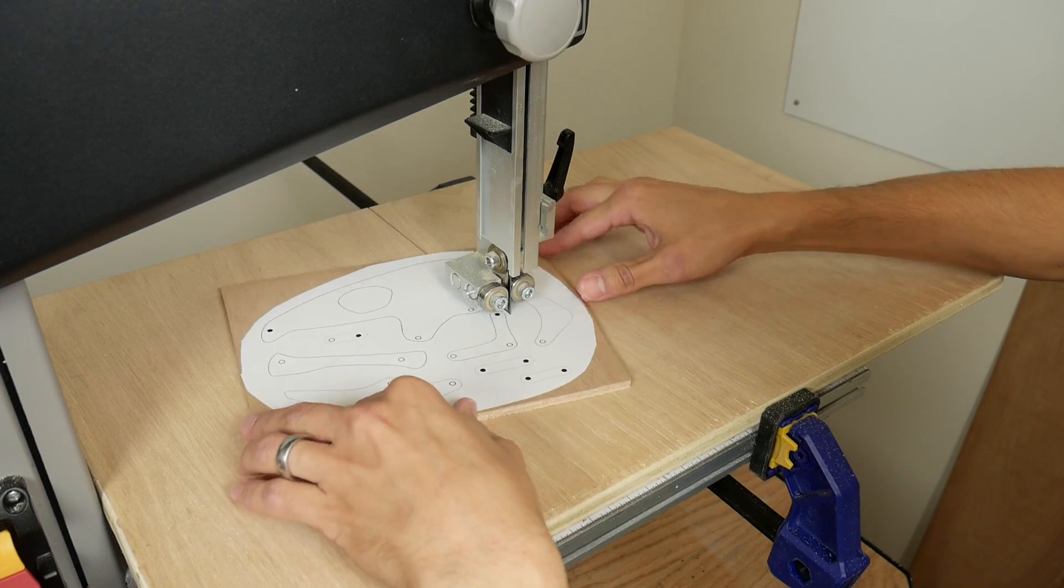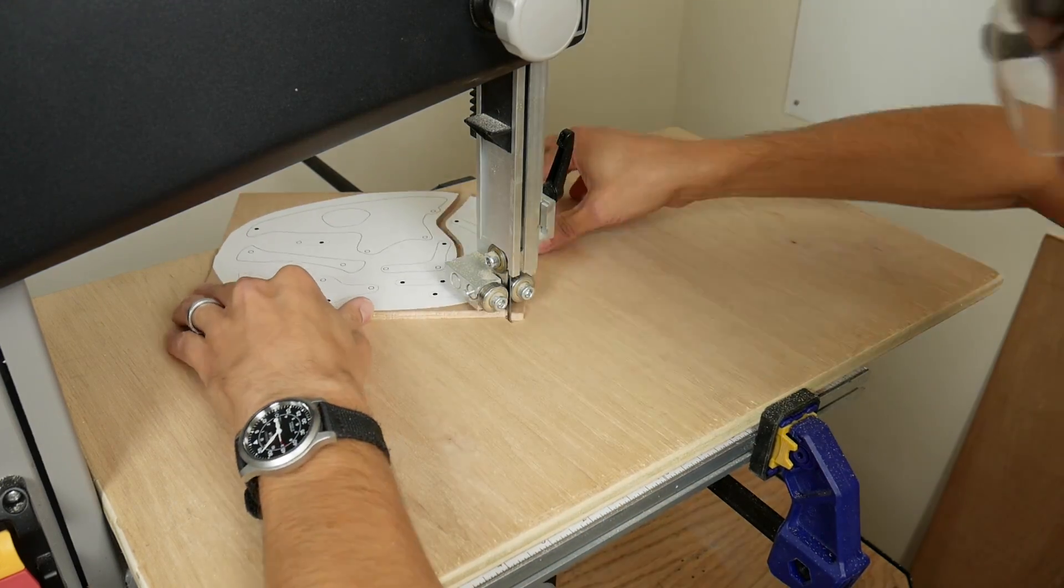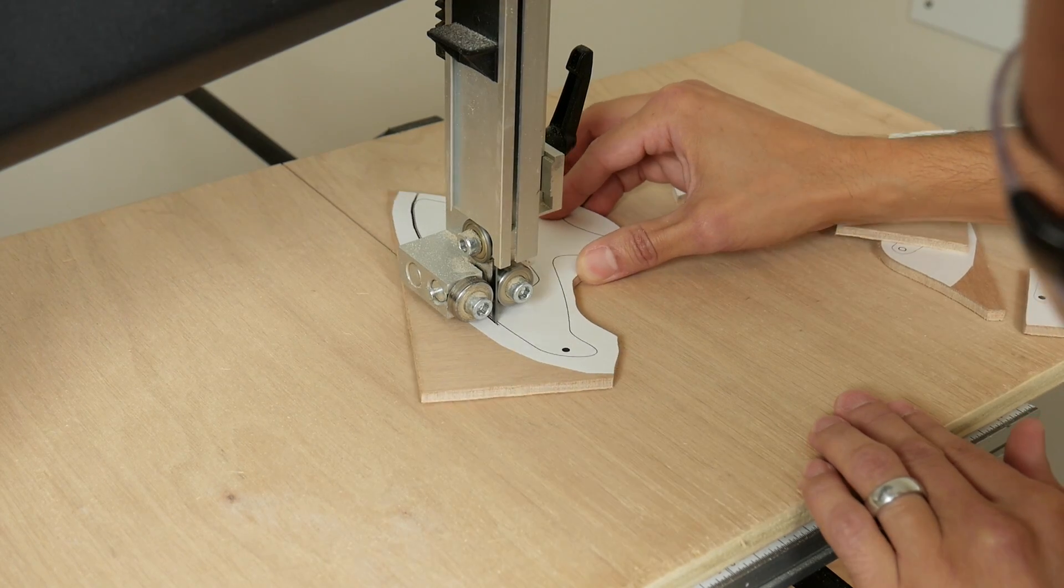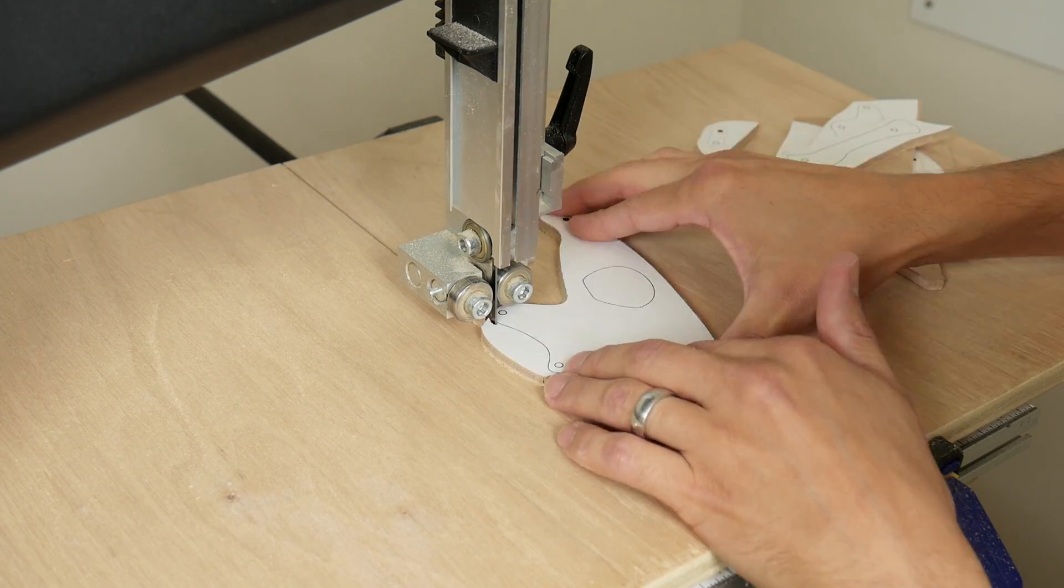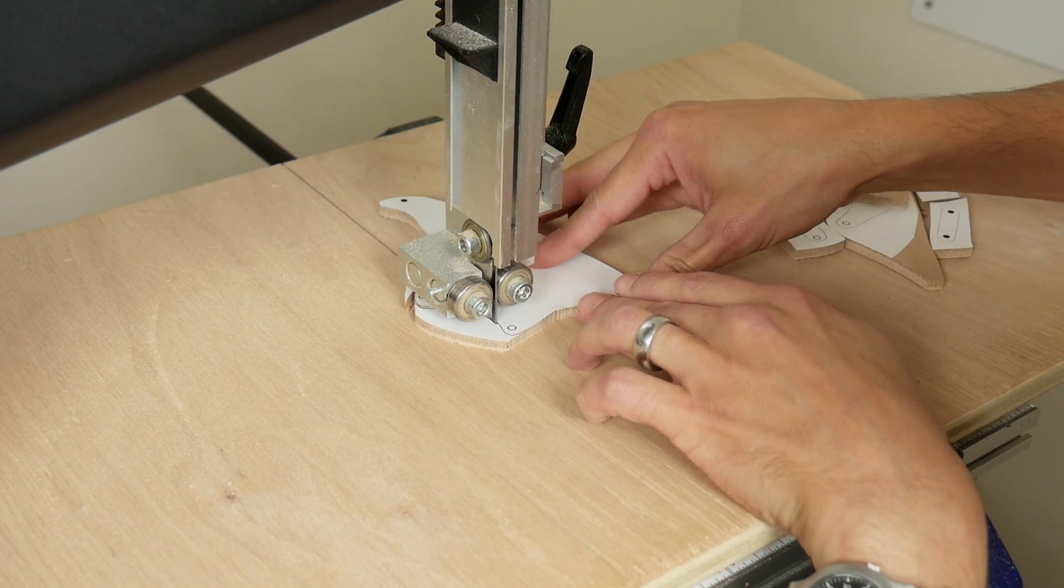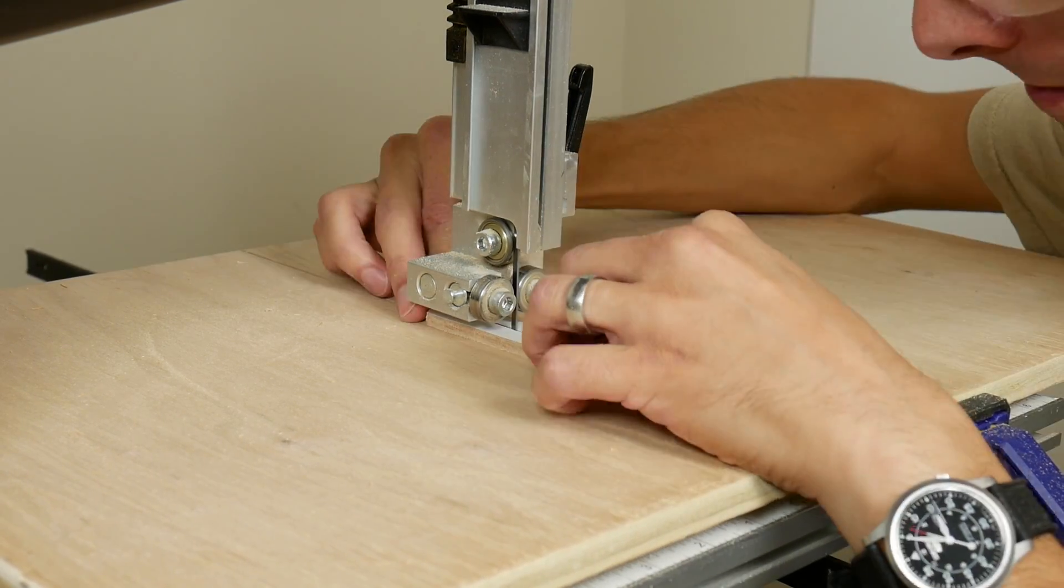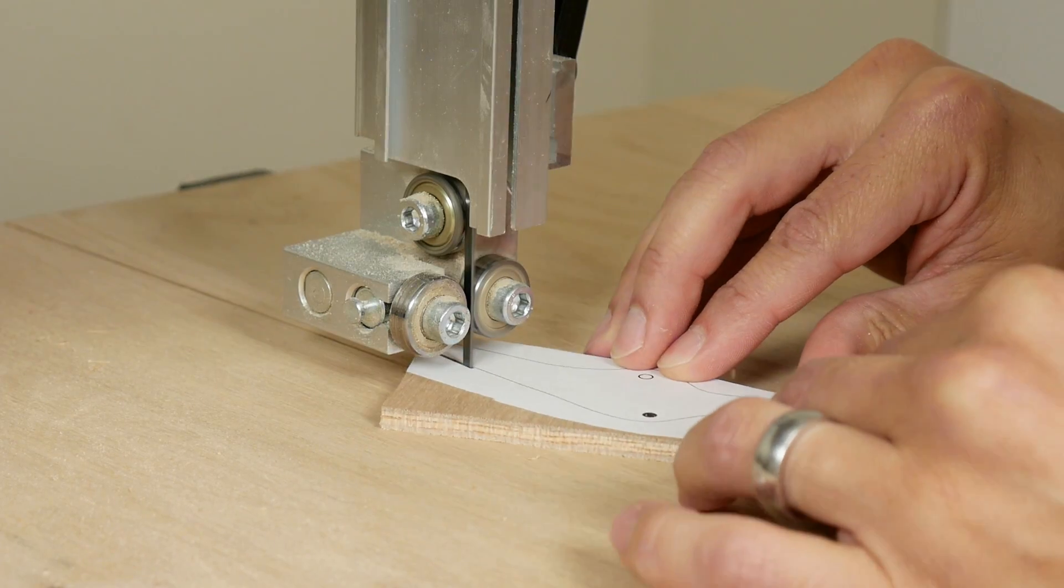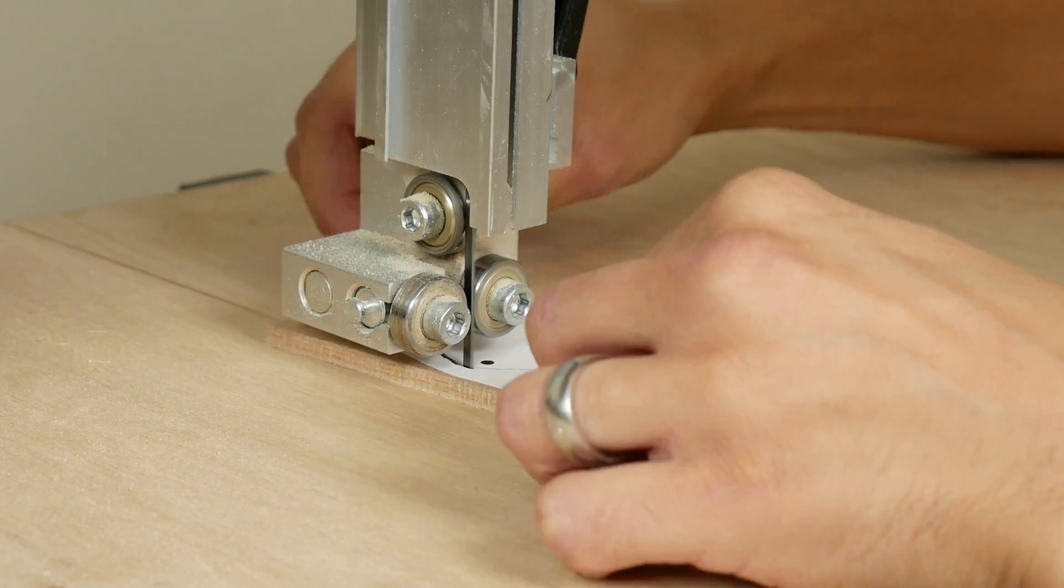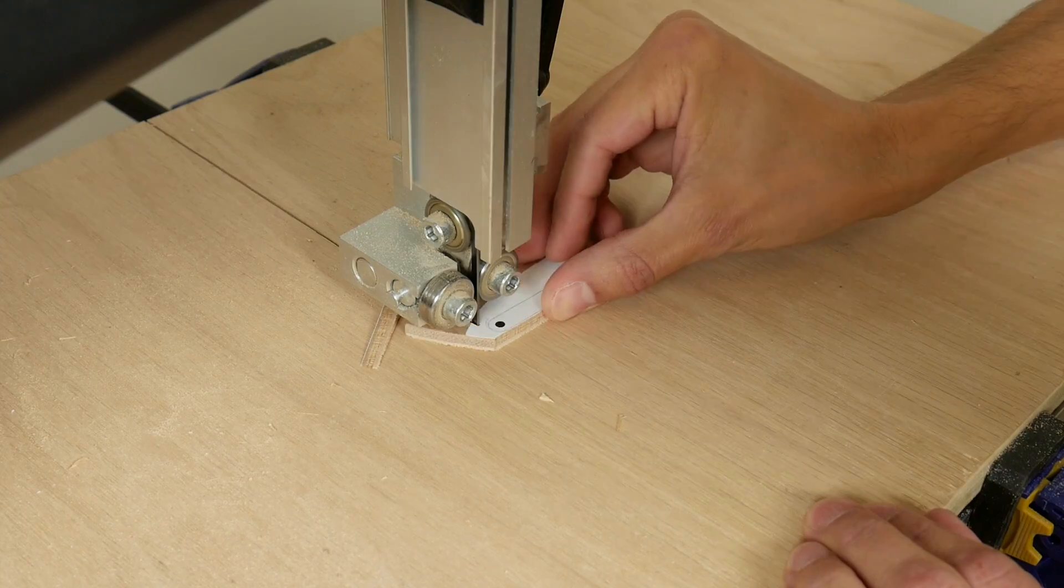Then cut the pieces out on my band saw. I used a quarter inch 14 tpi blade because the plywood is so thin. Alternatively you could use a scroll saw or you could cut the pieces out by hand with a coping saw.